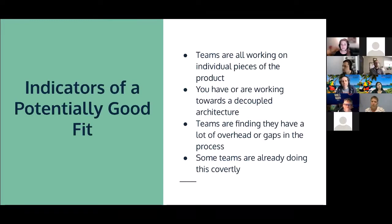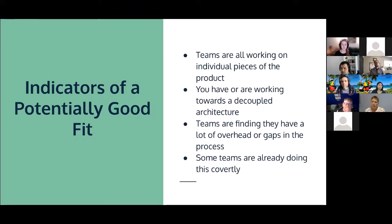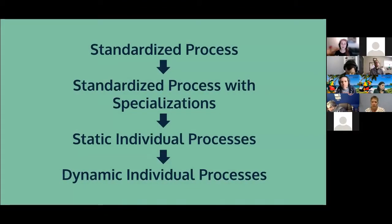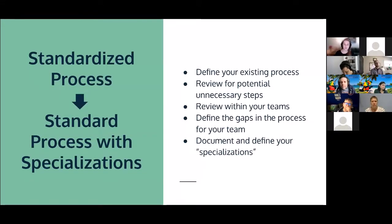Teams finding they have a lot of overhead or gaps in their process is another good indicator. If teams are already covering areas that the process doesn't address, or skipping over parts of the overall plan that aren't applicable to them, that's generally an indicator that individualized processes could be considered. If you've decided it's a good fit, in my experience we broke it down into three steps: moving from a standardized process into a standardized process with specializations, then into static individual processes, and finally into dynamic living individual processes.